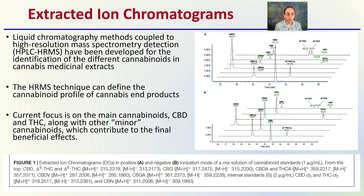The HRMS technique can define the cannabinoid profile of cannabis end products, which is very important. Current focus is on the main cannabinoids such as CBD and THC, along with some of the other minor cannabinoids, which contribute to the final beneficial effects. Having a very precise measurement here allows us to develop a detailed understanding of what is actually in that cannabis plant and what it has actually produced.